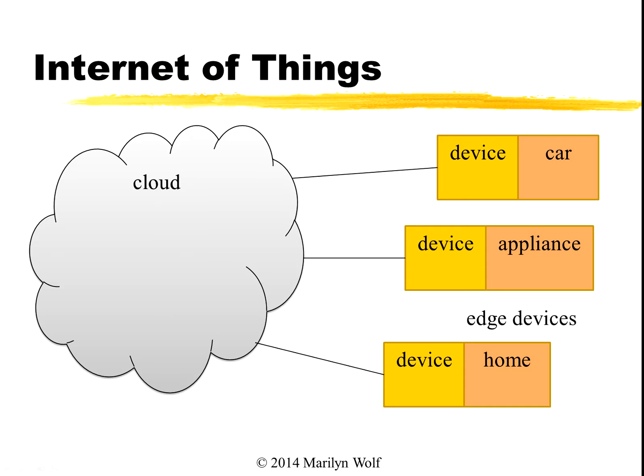We can connect up the cloud to a number of devices that themselves are used to control cars perhaps, appliances, our homes, and they may even monitor our health. We call these devices edge devices because they are at the edge of the cloud. This combination of edge devices connected to the real world with the power of the internet and the cloud is what we call the Internet of Things.